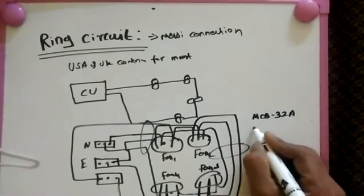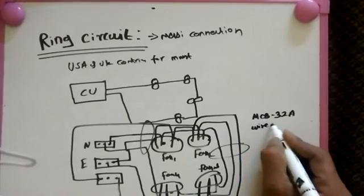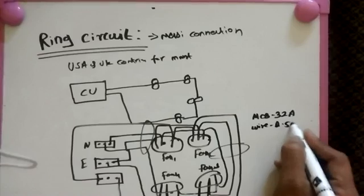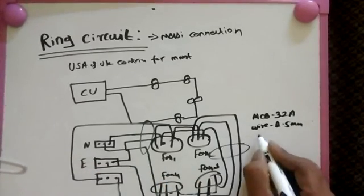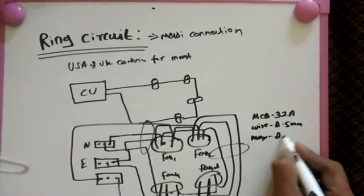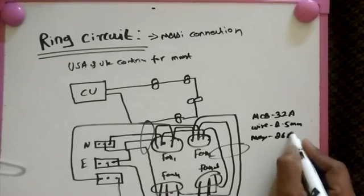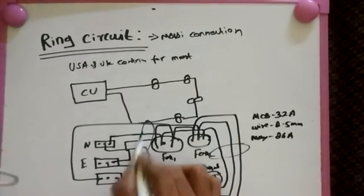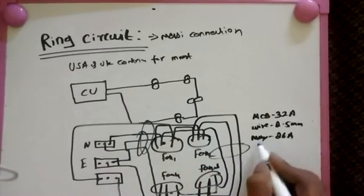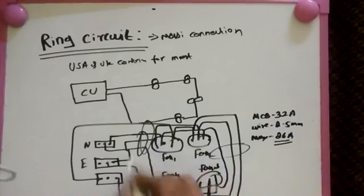Wire size is 2.5 mm, and then another one is maximum current 26 ampere. This is the rating. If we break the connection here, the current rating will increase on one side.